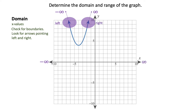The right arrow is approaching positive infinity. Because your domain includes both negative infinity and positive infinity, you could say that's all real numbers, or you can express that in interval notation with parentheses from negative infinity to positive infinity. You always go from your least possible value to your greatest possible value.